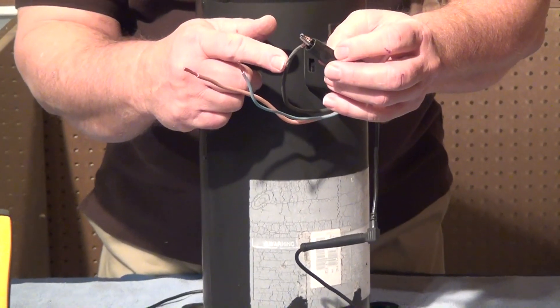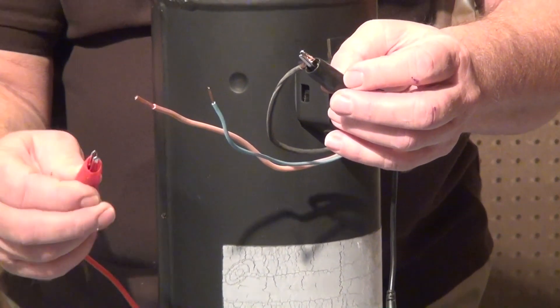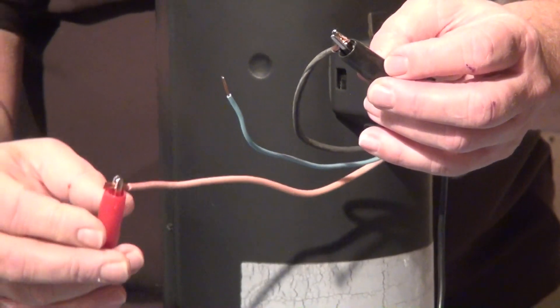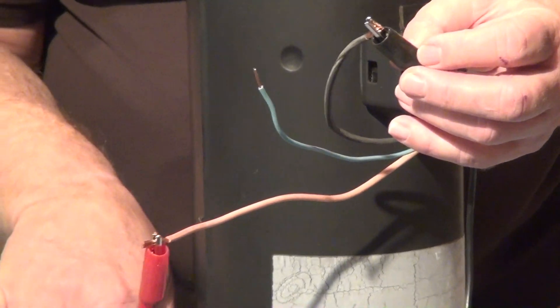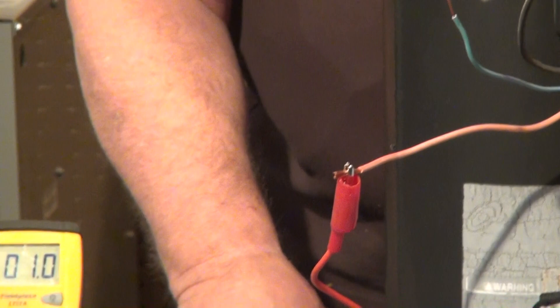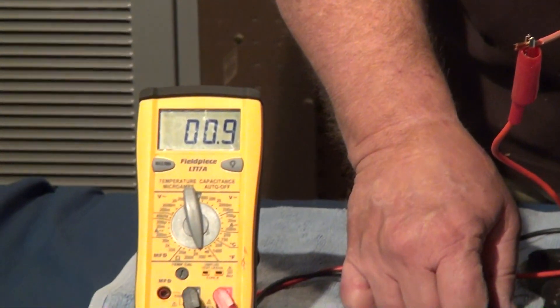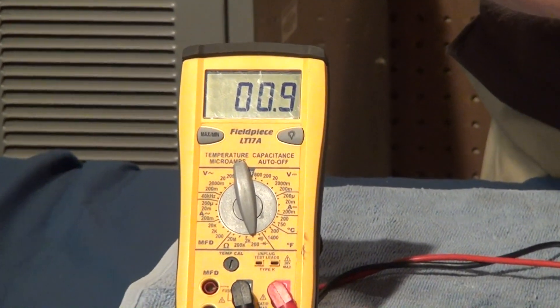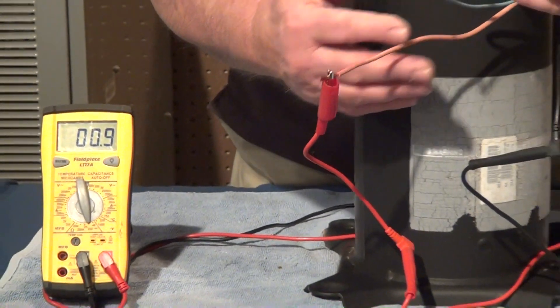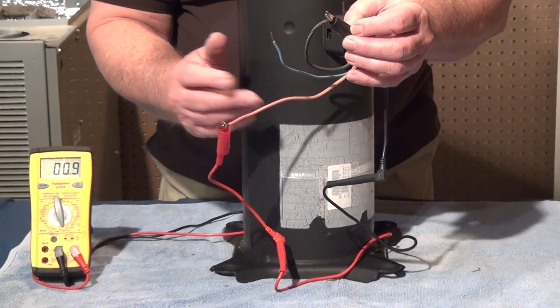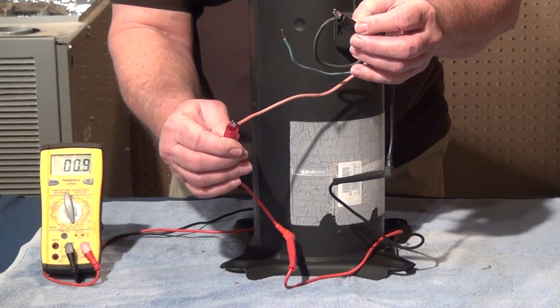We're going to start out by putting this lead on the common terminal and then we're going to take this lead of our meter and put it on what we know to be the run terminal of this particular compressor, and what you can see there is that we've got just about one ohm resistance, and that is true because we're testing the run winding of the compressor. In other words, knowing what right is in the first place tells us that this is what it's supposed to be, and you can see that our meter is telling us that's correct.